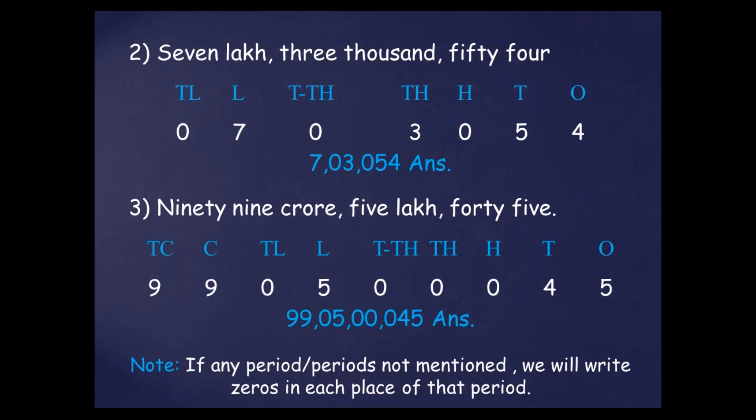So it is 99,05,00,045. Now there is a thing you have to remember: if in a number, a period or periods are not mentioned — like in the given example, 1,000 is not mentioned — so what we have done is kept zeros at the 10,000 and 1,000 places. Wherever in the number name you find that any period is missing, in that period you have to write zeros — as many zeros as there are places in that period. Thank you students, for today it is done.